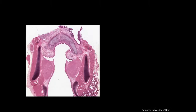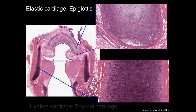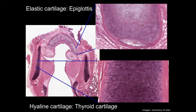Here we can see the larynx, which is a great slide to compare the differences between the elastic cartilage of the epiglottis and the hyaline cartilage of the thyroid cartilage. You can see that the hyaline cartilage is much glassier, and there are clearly more cells in the elastic cartilage.